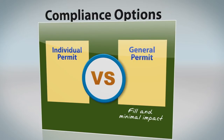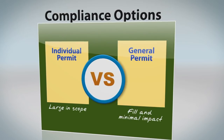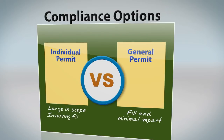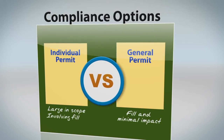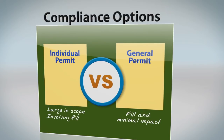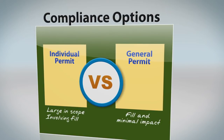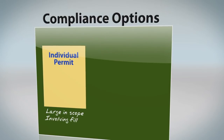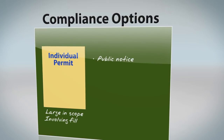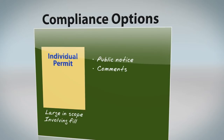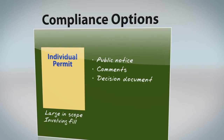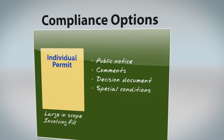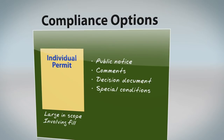Individual permits are required for projects considered large in scope and/or involving potentially conflicting issues in environmentally sensitive areas. Any project involving fill or potential adverse impacts to navigable waters requires an individual permit. The public interest is an important component of the individual permit evaluation process, which includes issuance of a public notice, solicitation of comments from government agencies and the public, and a decision document describing the environmental impacts and the findings of the public review process. The Corps will add any special conditions deemed appropriate for minimizing adverse impacts to the environment.